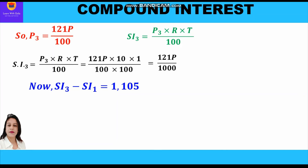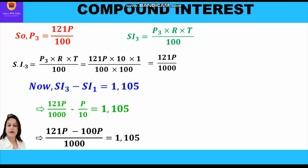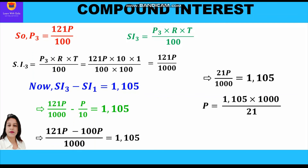We have the simple interest for the first year as P/10 and for the third year as 121P/1000. The difference between the two was given as 1105. So: 121P/1000 − P/10 = 1105. Taking LCM as 1000: 121P − 100P = 1105 × 1000, which gives 21P/1000 = 1105. Cross multiplying: P = 1105 × 1000 / 21.